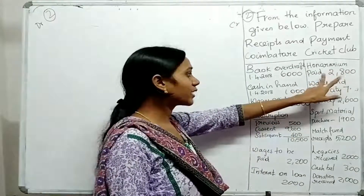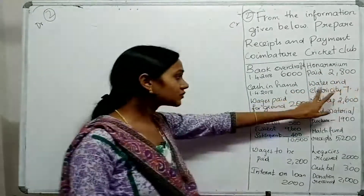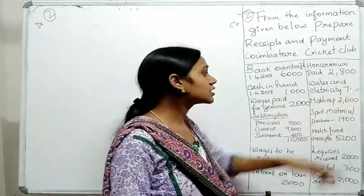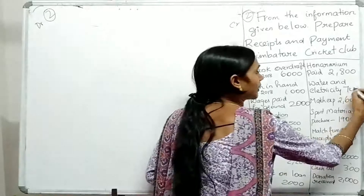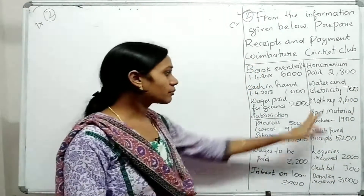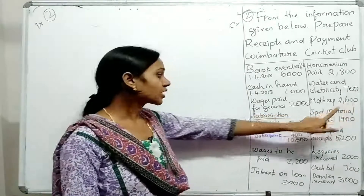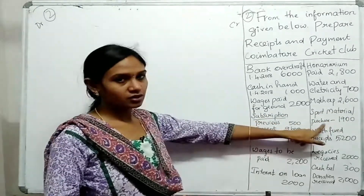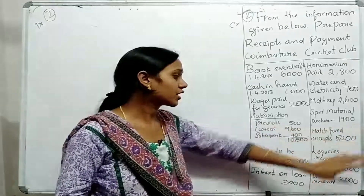Honorarium paid: $2,800. Water and Electricity Charges: $700. Next, Sports Material Purchase — we have paid $1,900.